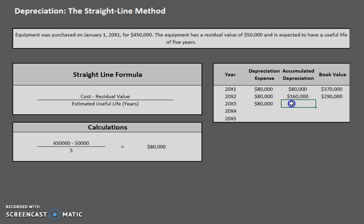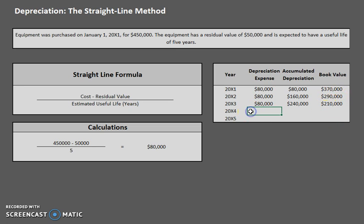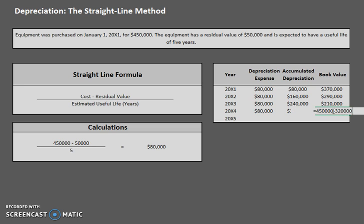Year three again: $80,000 depreciation expense. Accumulated depreciation last year had $160,000, and we accumulated even more, so now we have $240,000. Our book value is $450,000 minus $240,000 — it's just going down further and further as we go. Year four, nothing changed. We still have $80,000 depreciation expense. Accumulated depreciation: $240,000 plus $80,000. And book value: $450,000 minus $320,000.